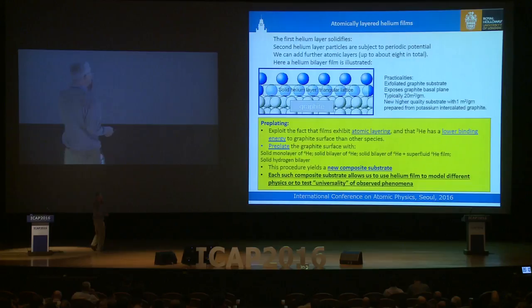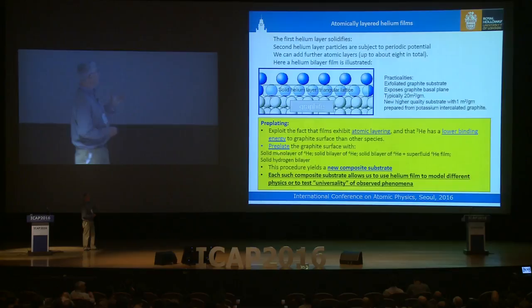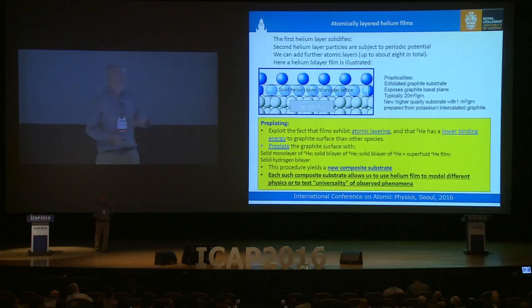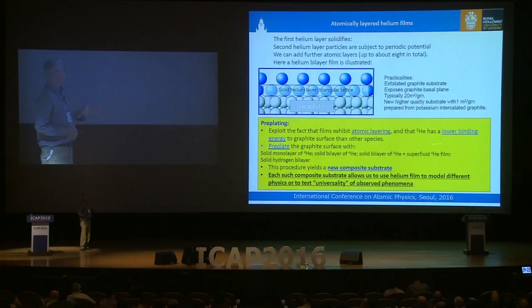An important feature of this work is flexibility through pre-plating. The films are atomically layered, and helium-3 has a lower binding energy to graphite because of its higher mass. This means we can pre-plate the surface with something else — a solid monolayer of helium-4, a bilayer of helium-4, a solid bilayer of helium-4 with a superfluid helium-4 film, a solid hydrogen bilayer, or other pre-platings. Every time we do this we have a new effective surface, a new composite substrate, giving us a high degree of tunability because every composite substrate has a different binding potential and different characteristics.